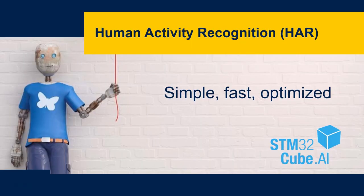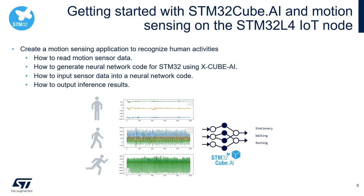In this application note series, we will learn how to create a motion sensing application to recognize human activities using machine learning on an STM32 microcontroller. The model classifies activities such as stationary, walking, or running from accelerometer data provided by the LSM6DSL sensor. We will learn how to read motion sensing data, how to generate neural network code for STM32 using STM32Cube.ai, how to input sensor data into a neural network, and how to output the inference results.